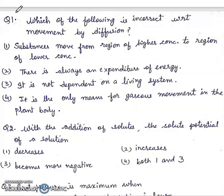Hello everyone, this is Disha. Welcome back to the channel Medical Disha. In this video I will be sharing a few important questions of the chapter Transport in Plants. First question: which of the following is incorrect with respect to movement by diffusion? First, substances move from region of high concentration to region of low concentration. Second, there is always an expenditure of energy. Third, it is not dependent on a living system. Fourth, it is the only means for gaseous movement in the plant body. The right answer will be second, because diffusion does not require any energy.